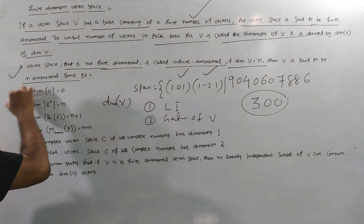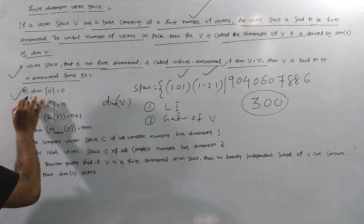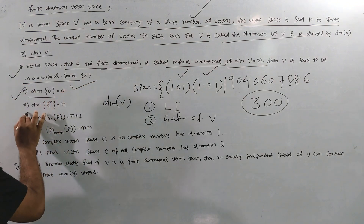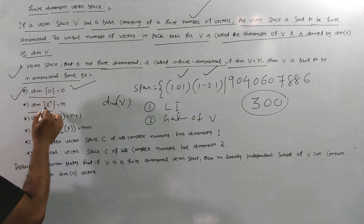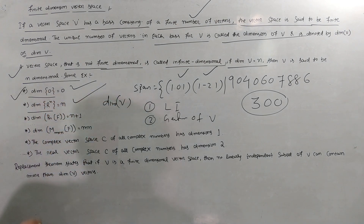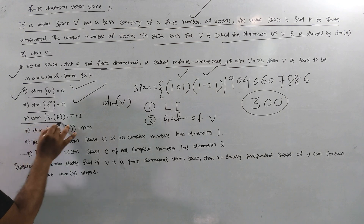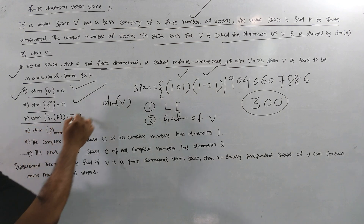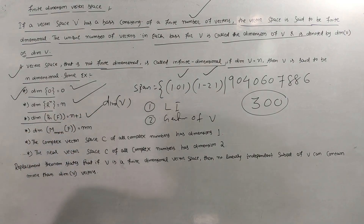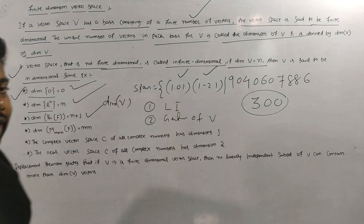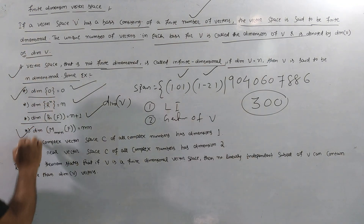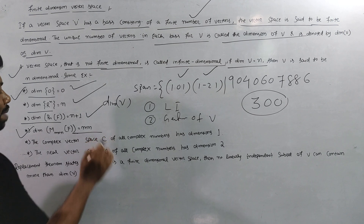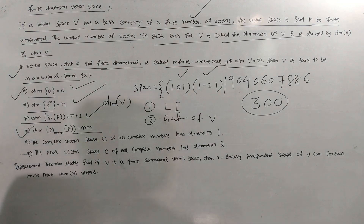For example: the dimension of {0} is 0; the dimension of R^n is n; if the polynomial is of degree n, then the dimension of the polynomial space is n plus 1. If the matrix space is formed as m by n, then its dimension will be m times n.